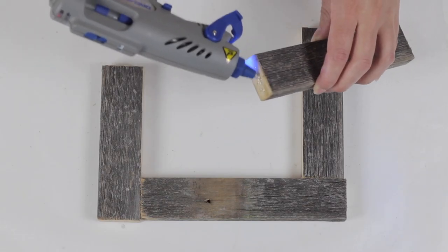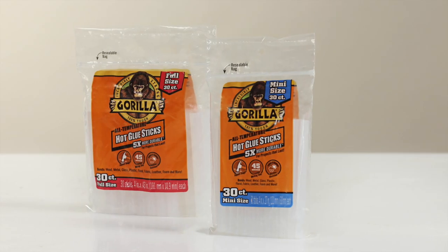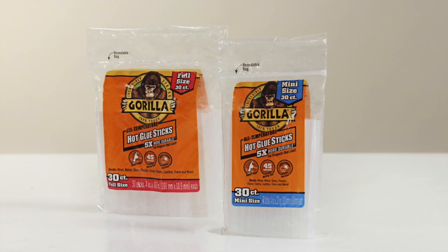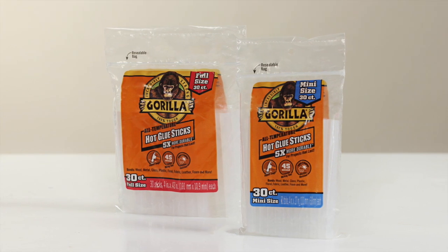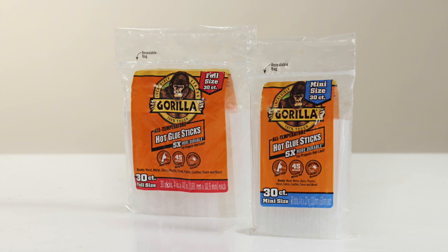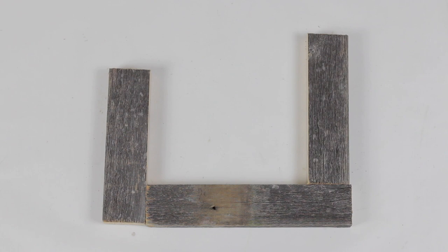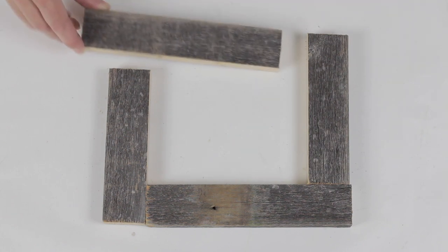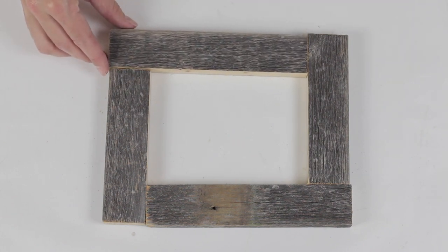It's now time to assemble the frame. For this we're using Gorilla hot glue sticks, which are five times stronger than leading hot glue sticks, and create a long-term hold on hard to bond surfaces. Working on top of a piece of wax paper, arrange the boards face down in alternating lengths end to end.